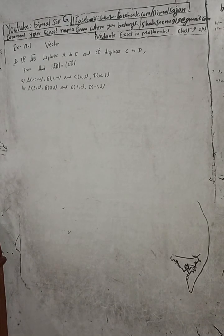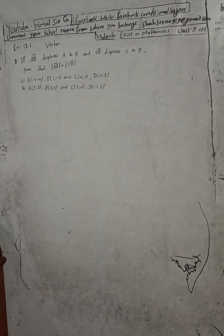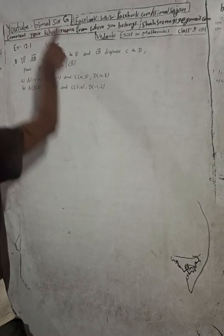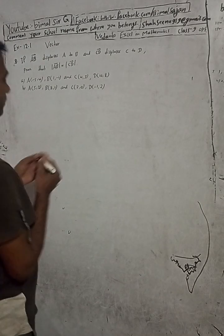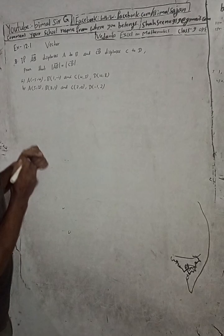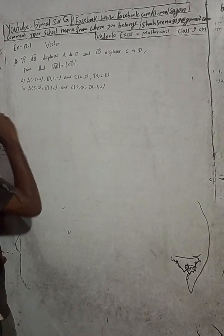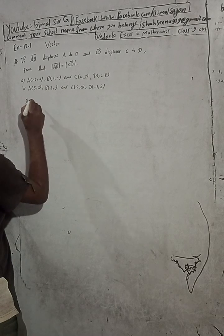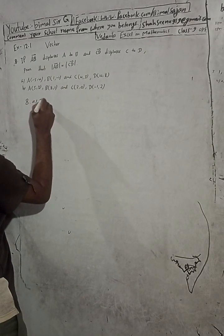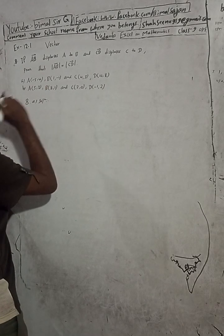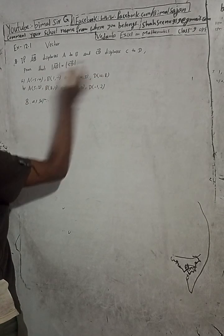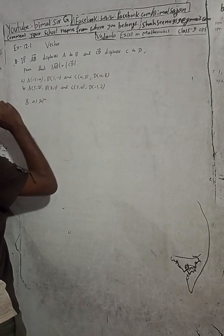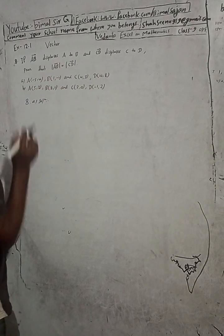Hi class 9 and 10 students, welcome back to Bimal Sarji's YouTube channel. This is question number 8, exercise 12.1, vectors - Vedant Excel in Mathematics class 9, OPD Mathematics. Check the playlist for lots of solutions. Now here, solution 8A: if AB vector displaces A to B and CD displaces C to D, prove that the magnitude of AB vector is equal to the magnitude of CD vector.